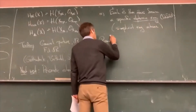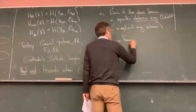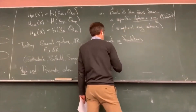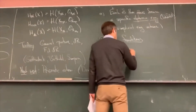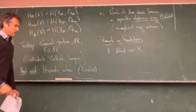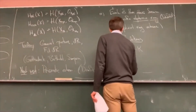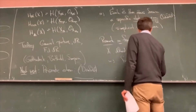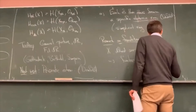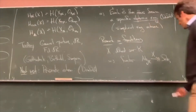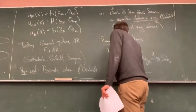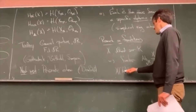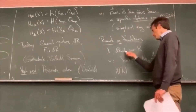Before we get into it, I should make a remark on foundations. If you have a variety or a scheme X defined by polynomial equations over some field or ring k, then this gives rise to a functor — the so-called functor of points — from algebras over k to sets. If you input a ring R, it outputs the solutions to the system of defining equations in R.